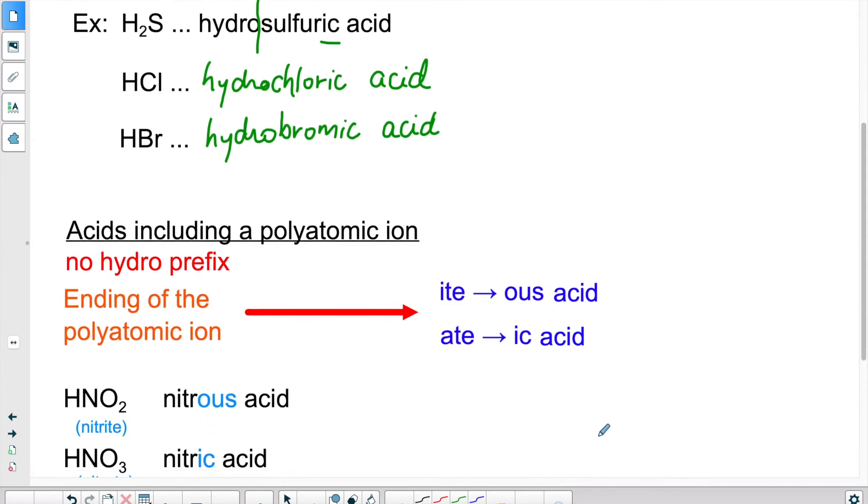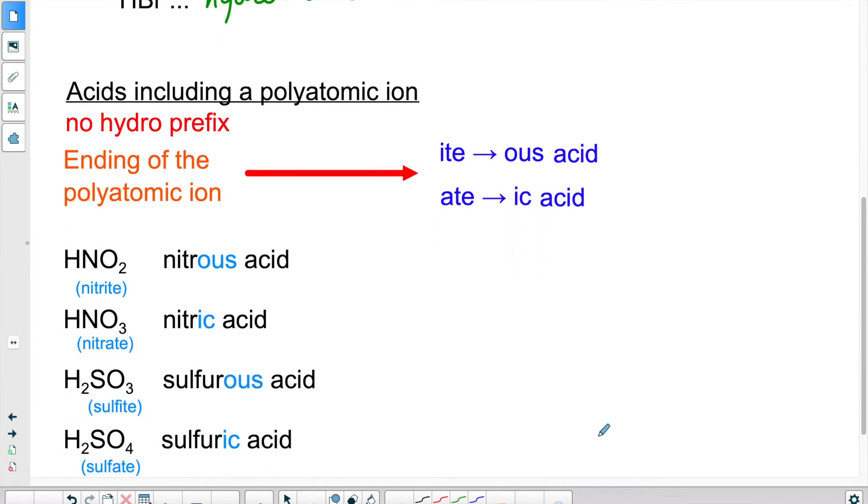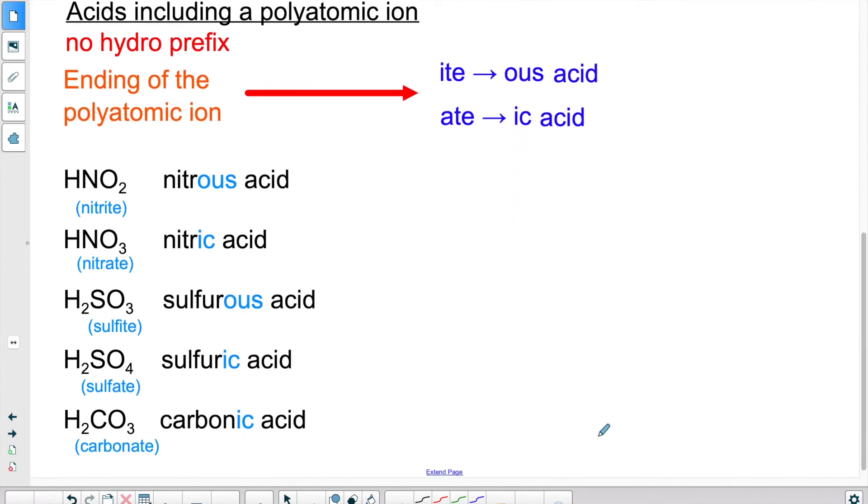If we look at a few examples, we have HNO2. Again, we don't pay attention to the H. We don't put hydro in front. We just name the polyatomic ion. The polyatomic ion here is called nitrite. We said anything that would end in ITE changes to OUS. So nitrite becomes nitrous acid.